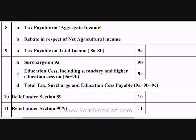Now we calculate the tax on your income. Calculate the income tax payable on the aggregate income according to the income tax slabs and put this amount in box 8A. You can visit my website to know the latest income tax slabs applicable to you and calculate the income tax based on it. In 8B, you have to put the rebate for agricultural income — this is a tax calculated as if your only income is agricultural income. Calculate this and put it in box 8B.